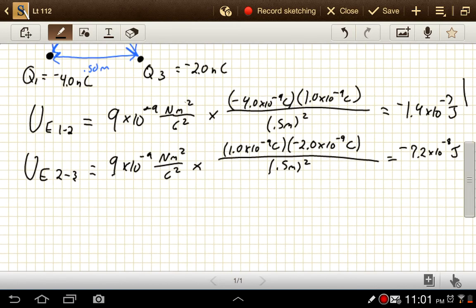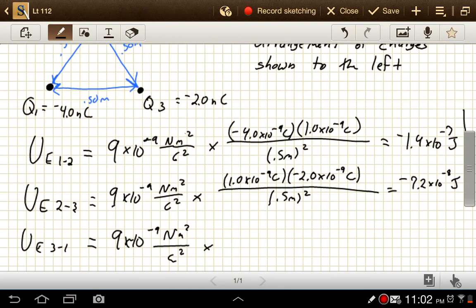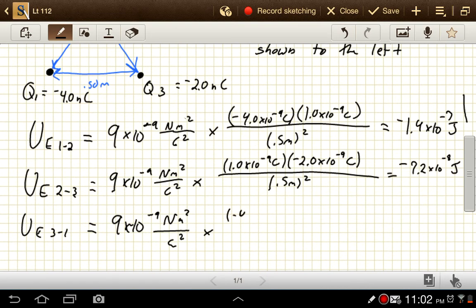And then the last one, the electric potential energy from three and one, is 9×10^-9 N·m²/C² times -4.0×10^-9 coulombs and -2.0×10^-9 coulombs, divided by 0.5 meters squared. This one gives us positive 2.88×10^-7 joules.